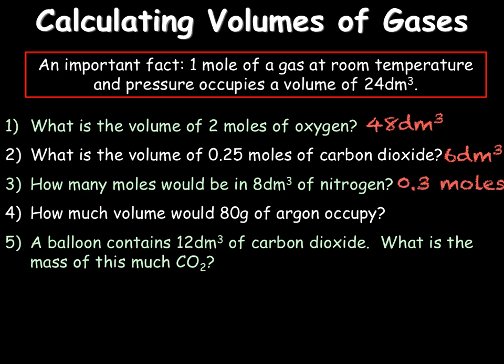For the next question we need to go back to our moles equals mass over mr. We are being asked for the volume of 80 grams of argon. If we look up argon in the periodic table we will find that it has an mr of 40. In order to work out our volume we need to work out our moles. So we will do moles equals our mass of 80 over our 40, which is the mr of argon, giving us 2 moles. We now have our moles of argon which is 2 so we can work out the volume doing 2 times 24 to give us a volume of 48 dm cubed.